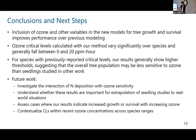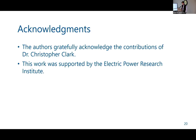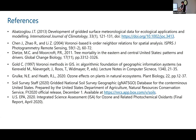A couple of future directions: first, understanding the interaction with nitrogen. Second, understanding whether there's anything useful for extrapolating results from seedling studies — which are generally what's available — and applying them to full mature tree populations like we have in the FIA dataset. Third, assessing cases where we see increasing growth or survival with increasing ozone. Finally, contextualizing the critical levels within recent ozone concentrations to understand where exceedances are currently occurring. This work has been supported by the Electric Power Research Institute.